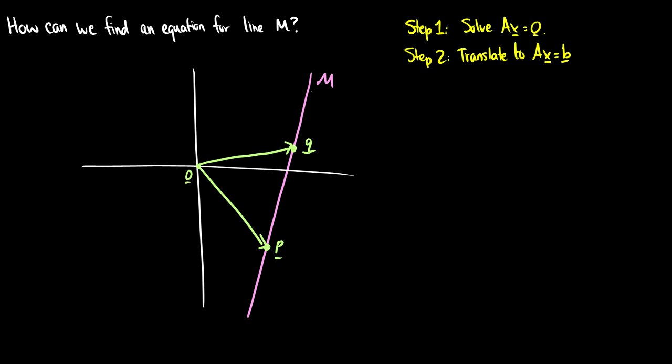Suppose we're just given two vectors q and p and we say, how do we find an equation for this line m? What's the solution to this? So we have two steps. We know this is going to be an ax equals b solution because we have a translation by either q or p.